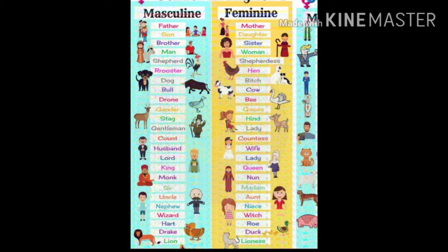As you can see here, some examples of masculine and feminine gender: father, mother, son, daughter, brother, sister, man, woman, shepherd, shepherdess, rooster, hen. These are some examples of masculine and feminine gender.